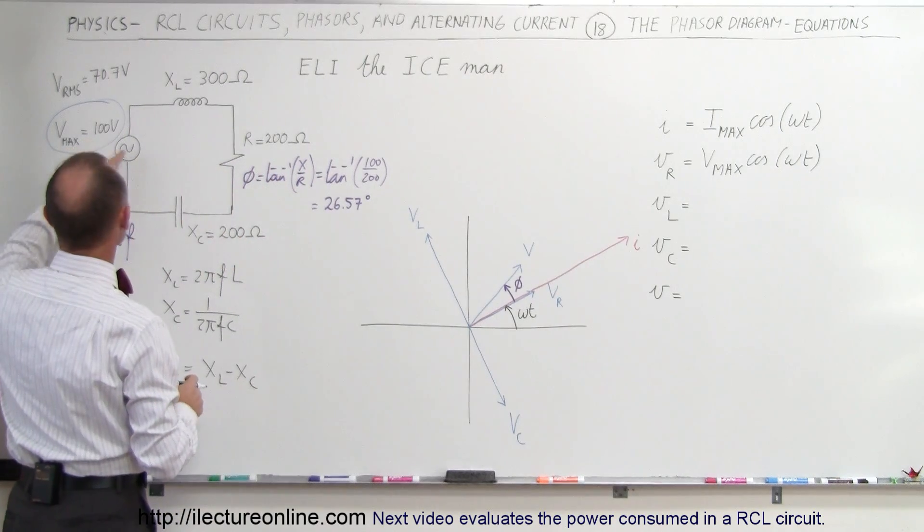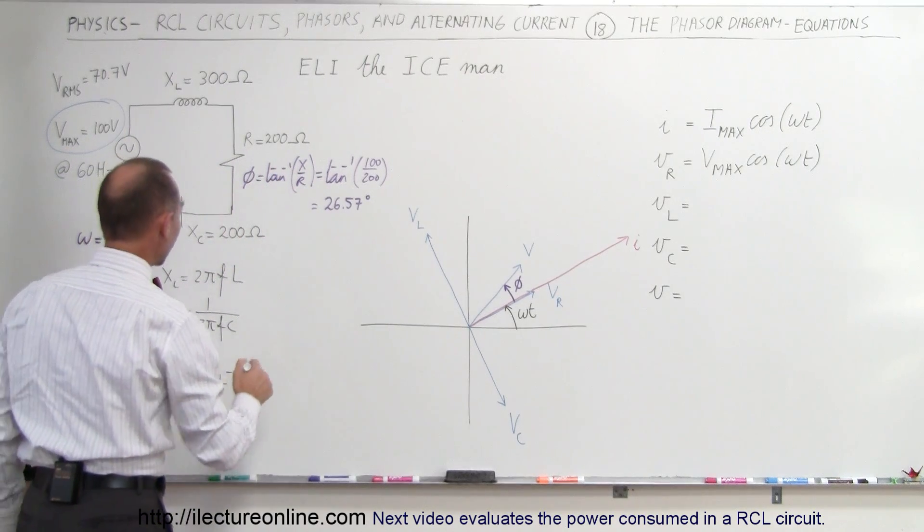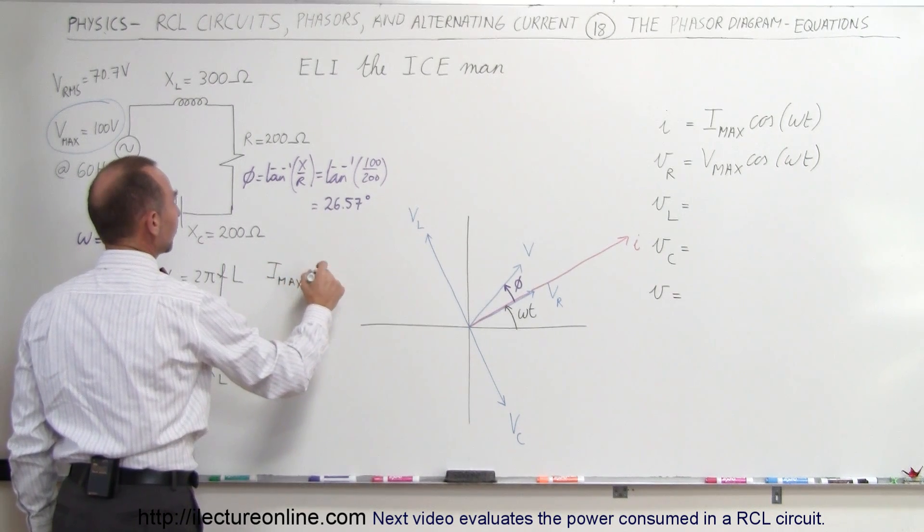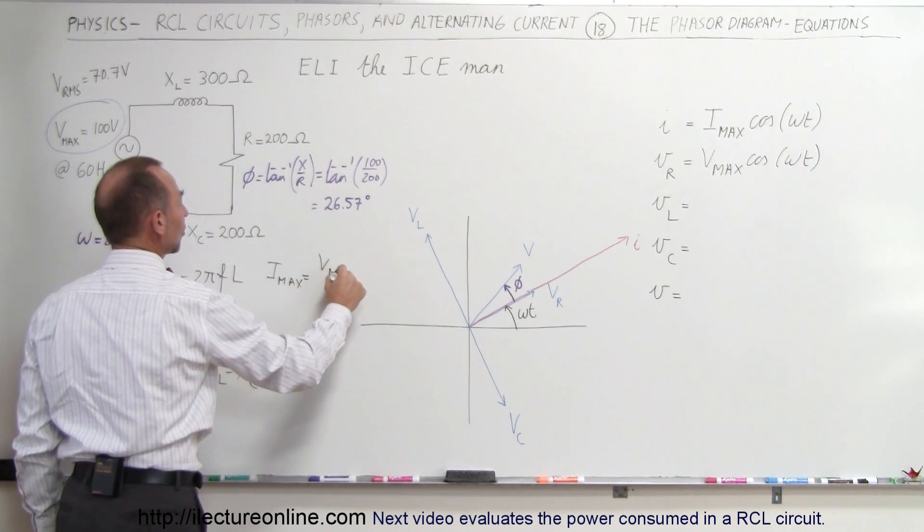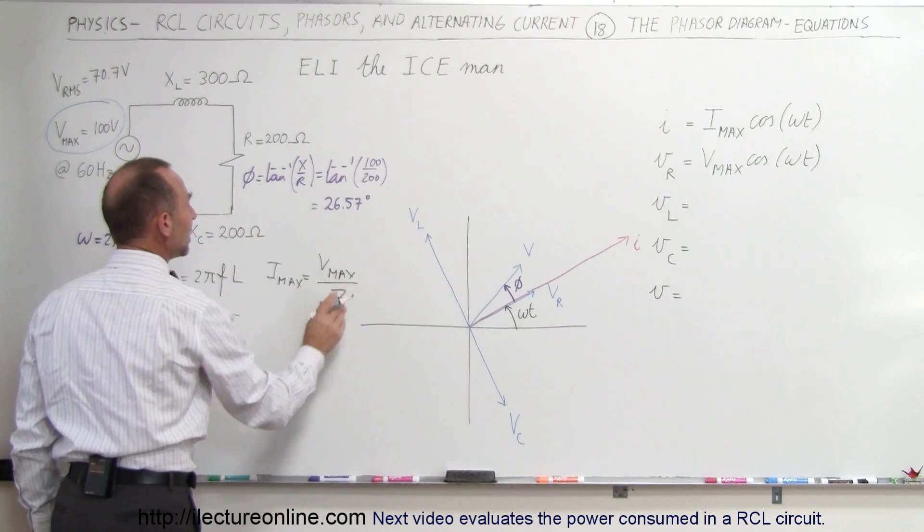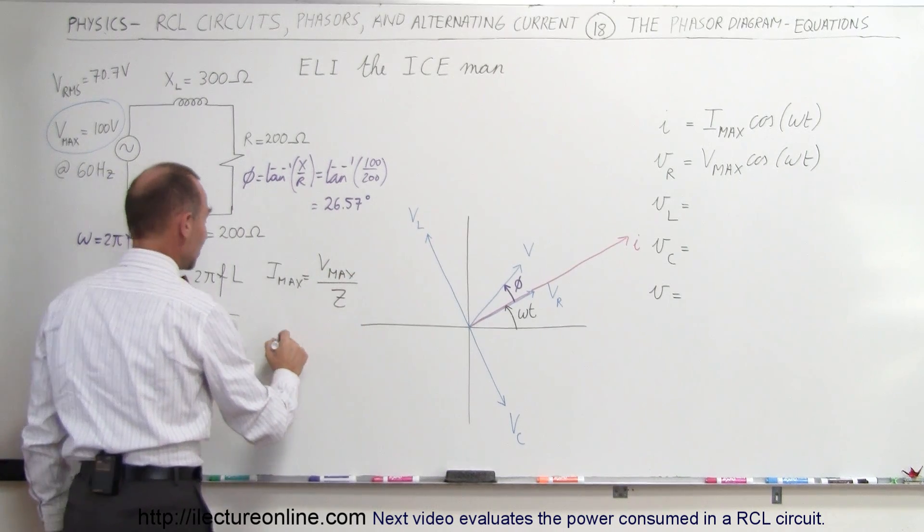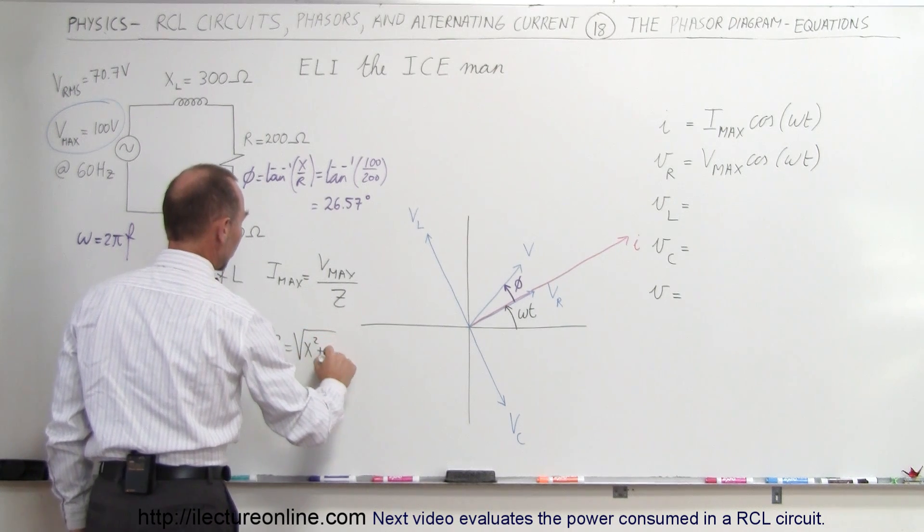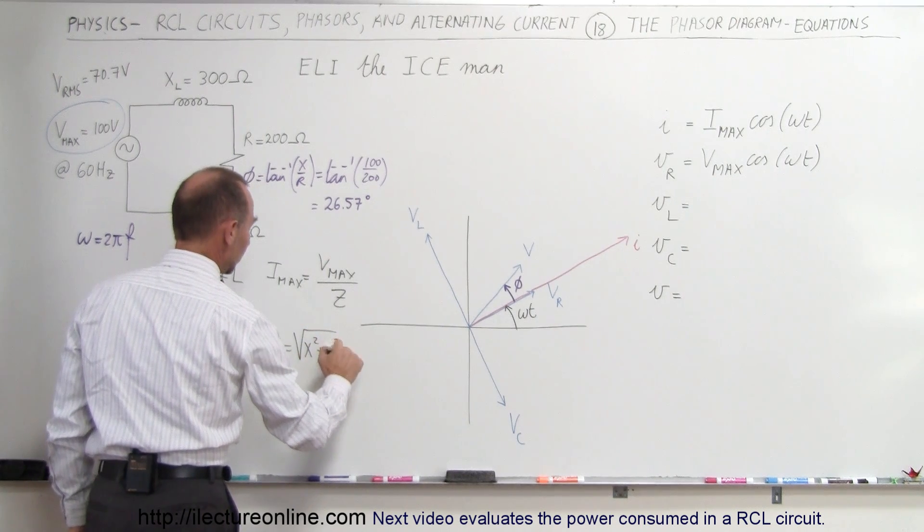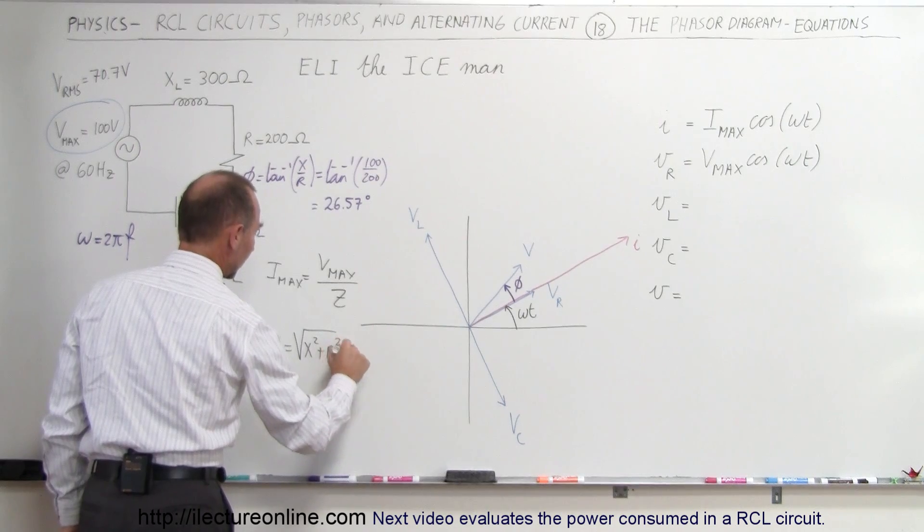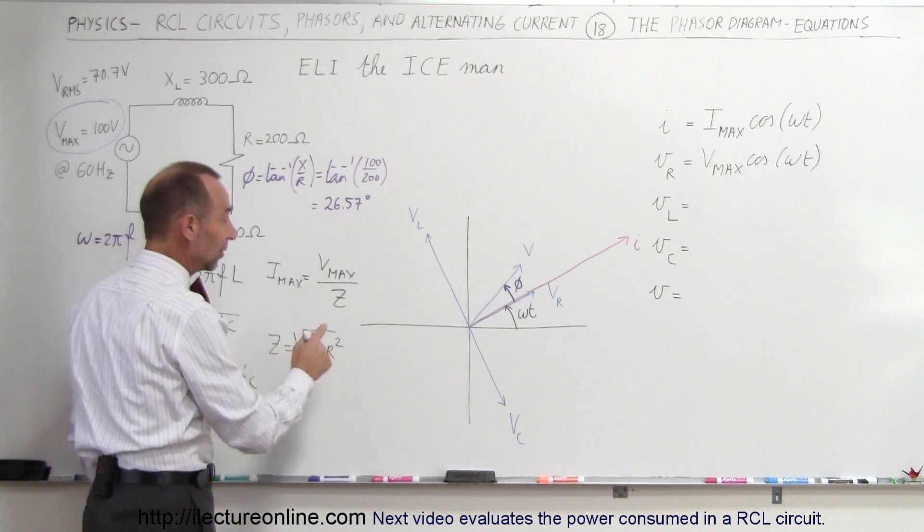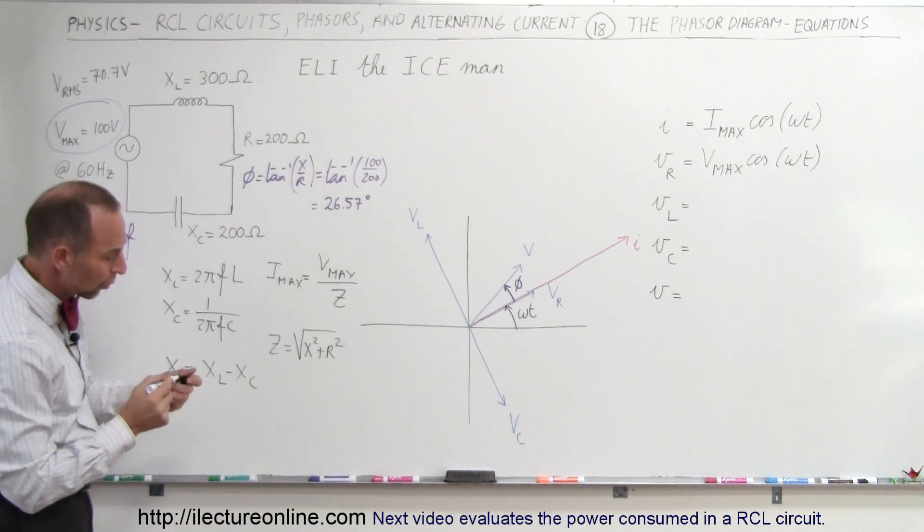Notice the voltage max comes from your voltage supply, and I max simply would come from taking the maximum voltage in the circuit divided by the total impedance of the circuit. Remember that the impedance Z is equal to the square root of X squared plus R squared. X, of course, being the reactance, that was 100 ohms, R being the resistance, that was 200 ohms in this case.